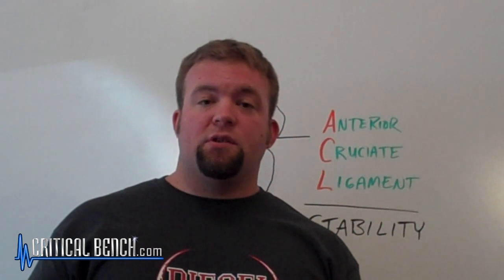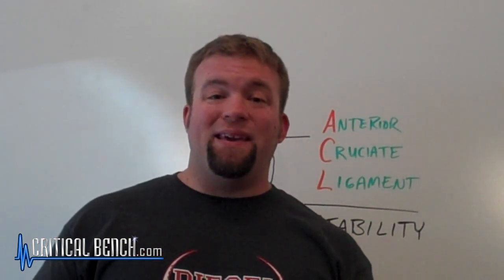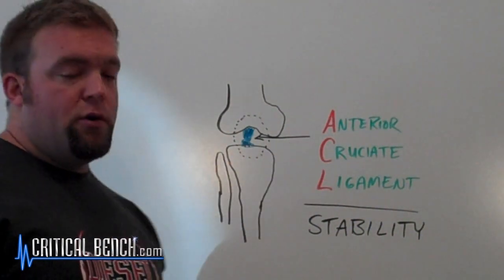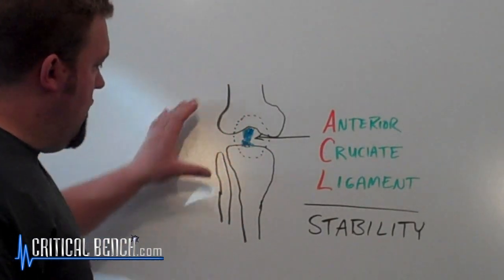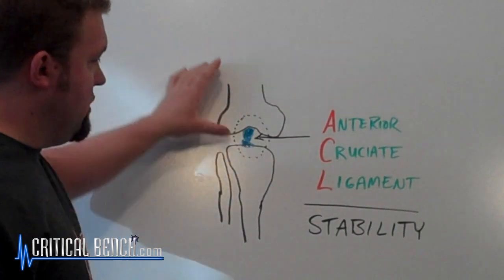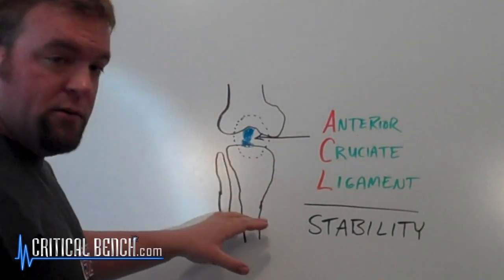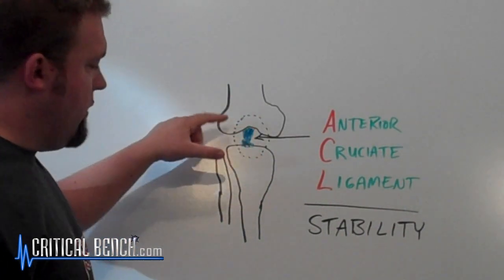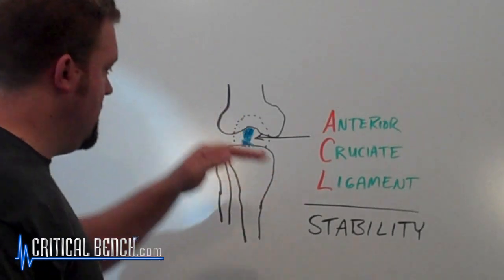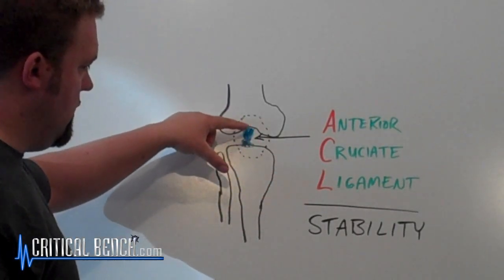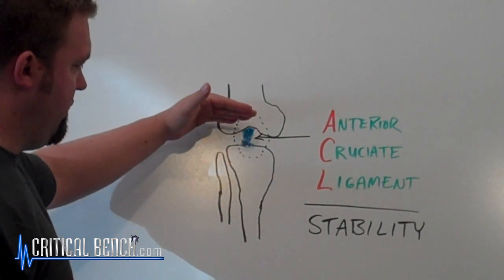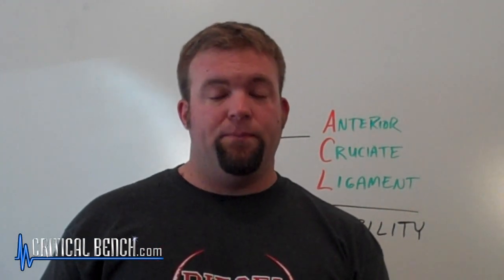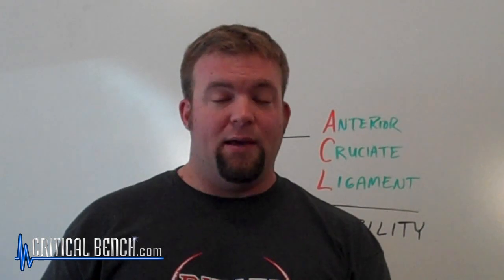Just a little bit of background on what exactly the ACL is. The ACL is in your knee and it stands for the anterior cruciate ligament. I've got a drawing of a knee right here. This is your upper leg bone, your femur, then your tibia, your lower leg bone, and then the fibula sits here as well. The dotted line here is your kneecap. If we look behind the kneecap, we're going to see a ligament here that connects the femur with the tibia — that is the ACL, the anterior cruciate ligament. What it's there for is stability; it keeps your knee stable.